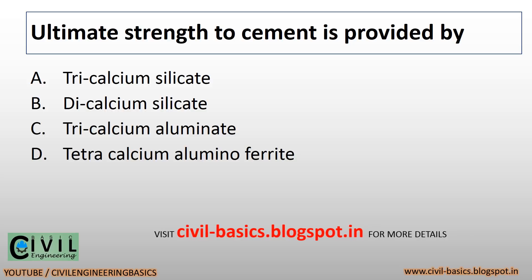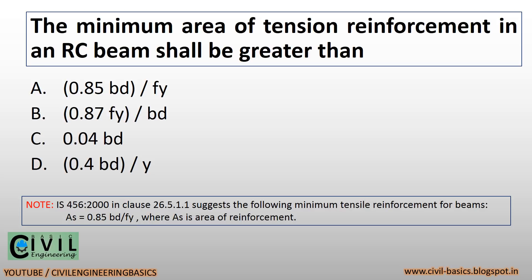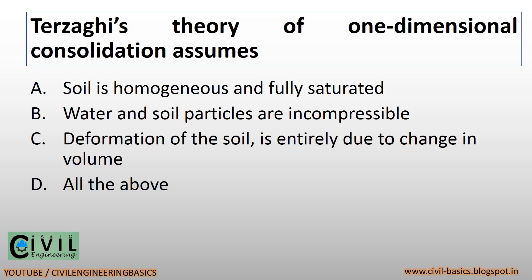Ultimate strength to cement is provided by Dicalcium Silicate. The minimum area of tension reinforcement in an RC beam shall be greater than 0.85 bd divided by phi. Terzaghi's theory of one-dimensional consolidation assumes all the above.